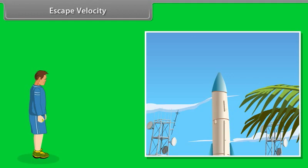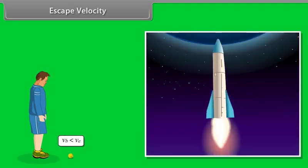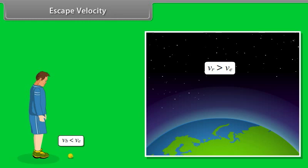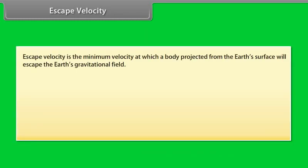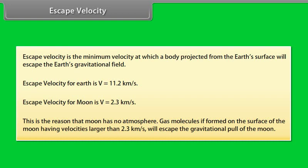Escape velocity. Can we throw an object with such high initial speed that it does not fall back to the earth? Yes. If we throw an object with escape velocity, it does not fall back to the earth. Escape velocity is the minimum velocity at which a body projected from the earth's surface will escape the earth's gravitational field. Escape velocity for the earth is V is equal to 11.2 km per second. Escape velocity for moon is V is equal to 2.3 km per second. This is the reason that moon has no atmosphere. Gas molecules if formed on the surface of moon having velocities larger than 2.3 km per second will escape the gravitational pull of the moon.